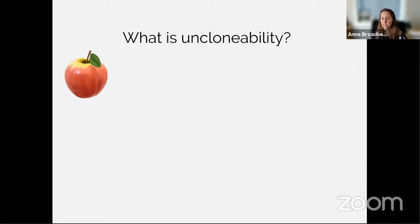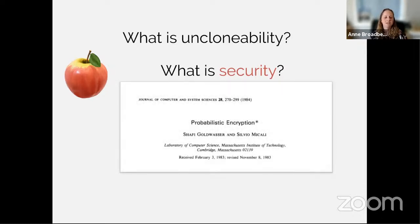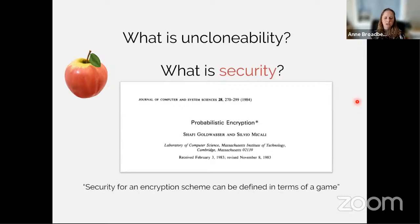Getting back to the question of what unclonability is — unfortunately we don't have a full answer. When trying to talk about embodiments of unclonability, it's useful to relate to other work in security and cryptography. Conventional cryptography has a 20 to 30 year head start. One of the best answers that emerged, with huge influence on the entire area, is the work around 1984 by Goldwasser and Micali on probabilistic encryption.